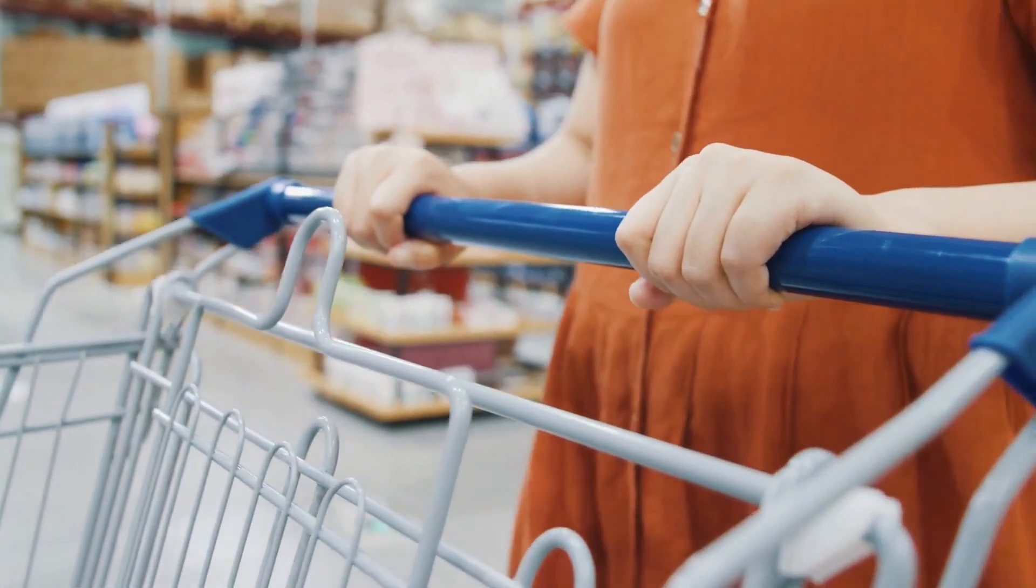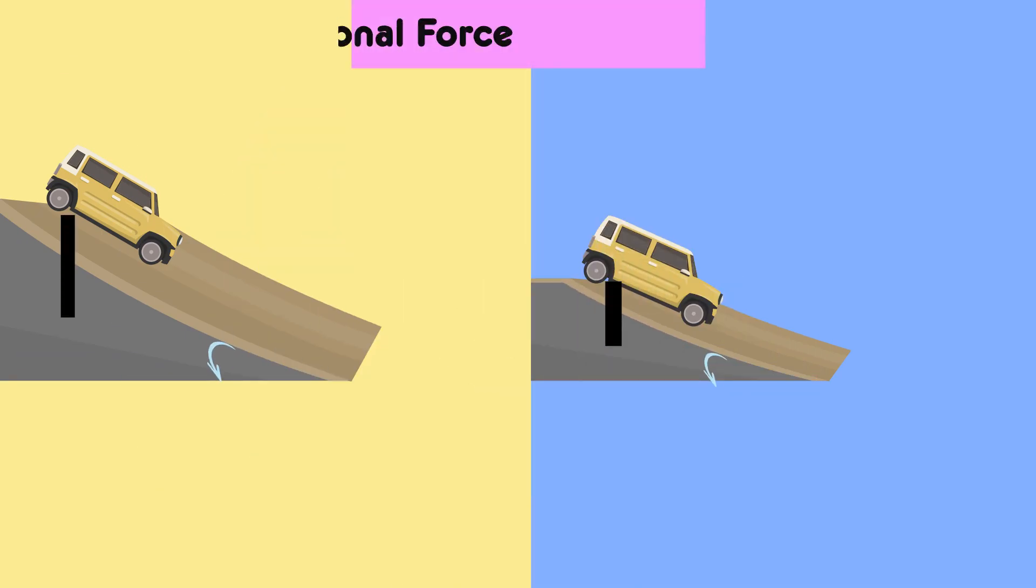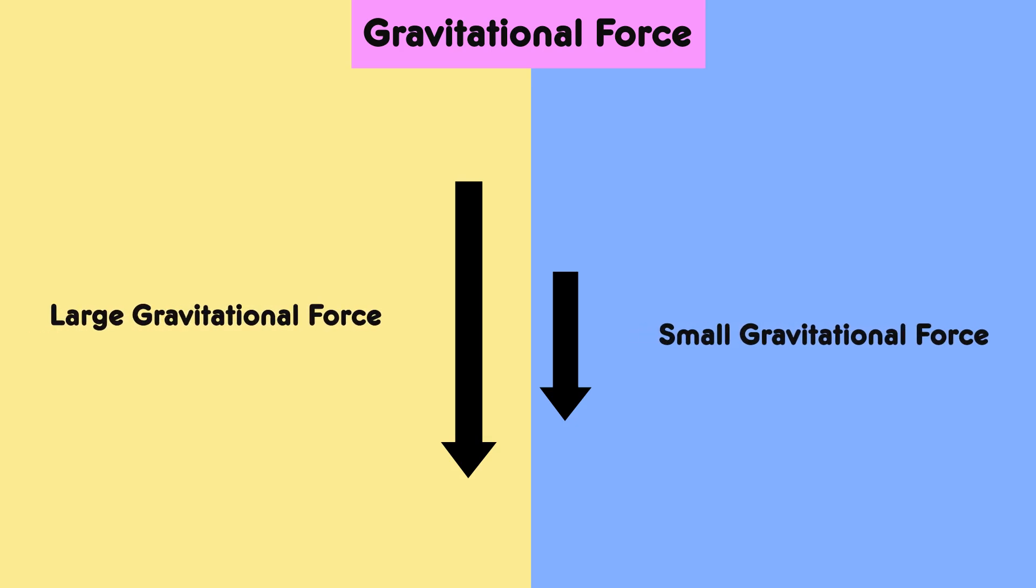Now let's understand more about how force and motion interact. The angle of the ramp affects the gravitational force acting on the toy car, which in turn influences its speed and distance traveled. By varying the ramp angle, we can observe how these factors influence the car's motion.